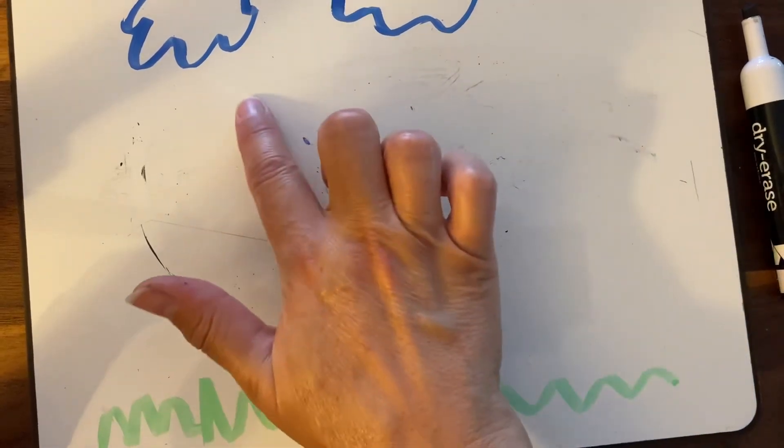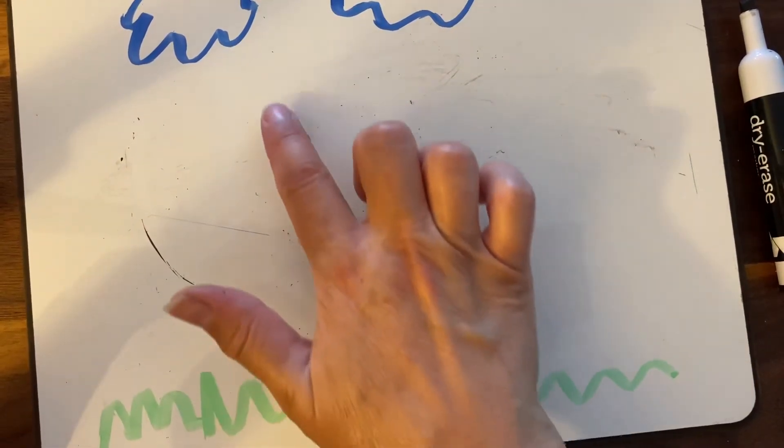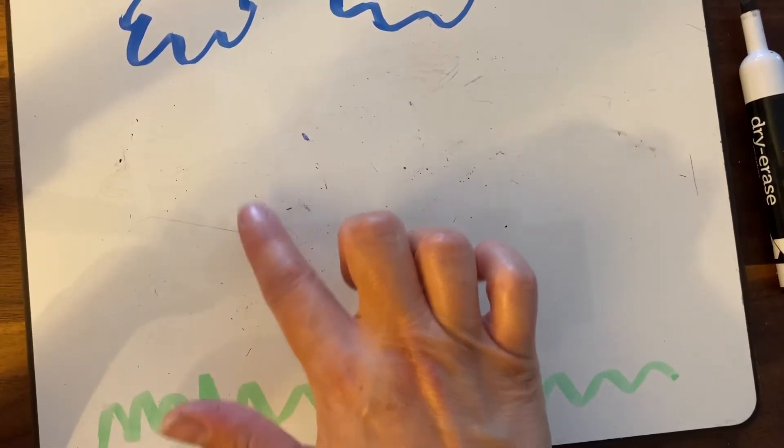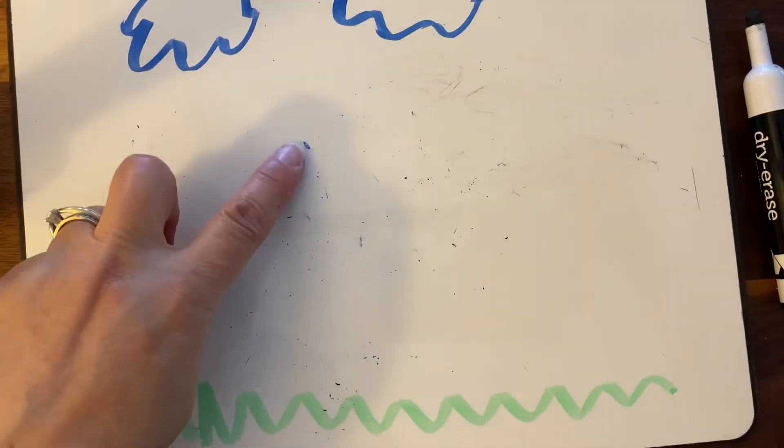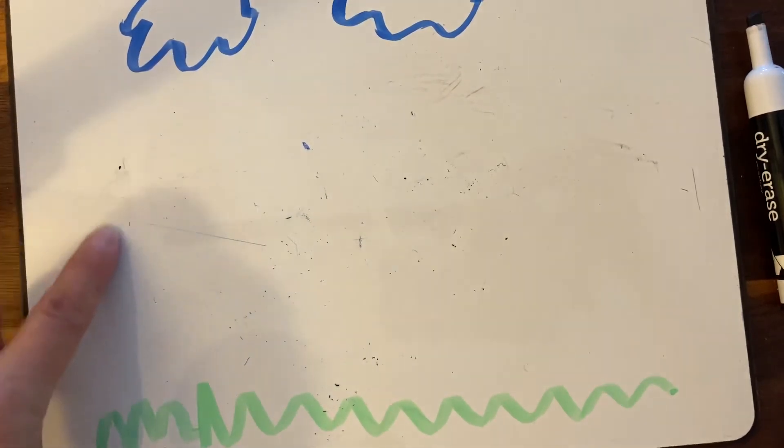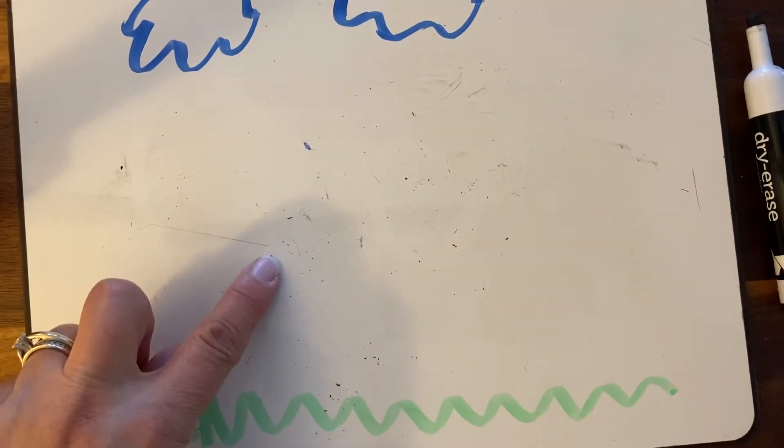So we call that finger tracing, just to train your brain, train your hand to make that C. If you are left-handed, you could finger trace same way. Over, around, open, C.